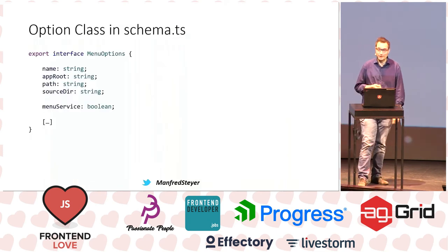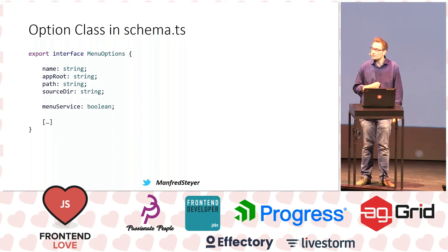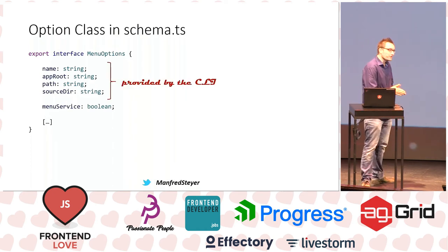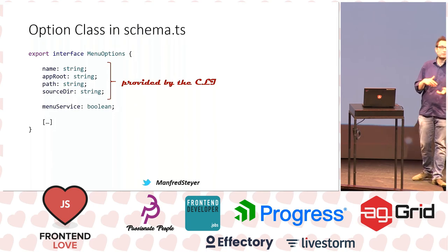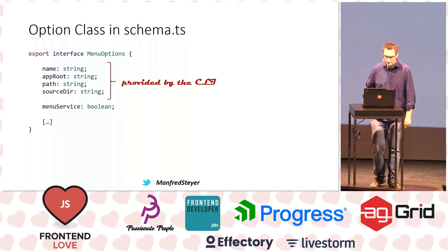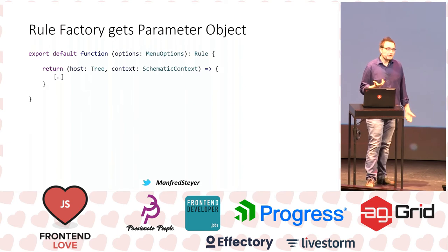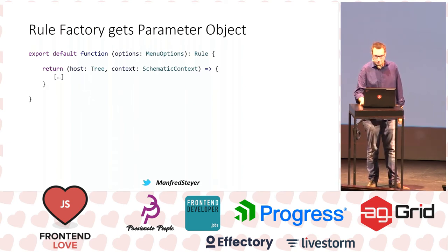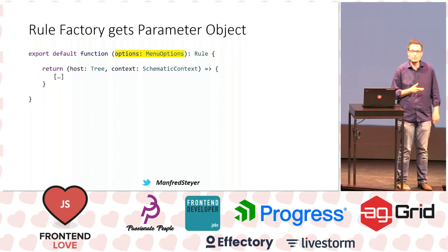This is what the class looks like — there are parameters like 'name', paths like 'appRoot', 'path', 'sourceDir', and the flag for the menu service. One important thing: the first parameters are automatically passed by the Angular CLI, so you don't have to bother about them — the CLI will find out the right values and pass them. The menu service flag is your custom parameter to pass. Looking into the source code, this is my rule factory with the rule — it gets the menu options object passed, and I can use all those properties to find out what to do when generating source code.